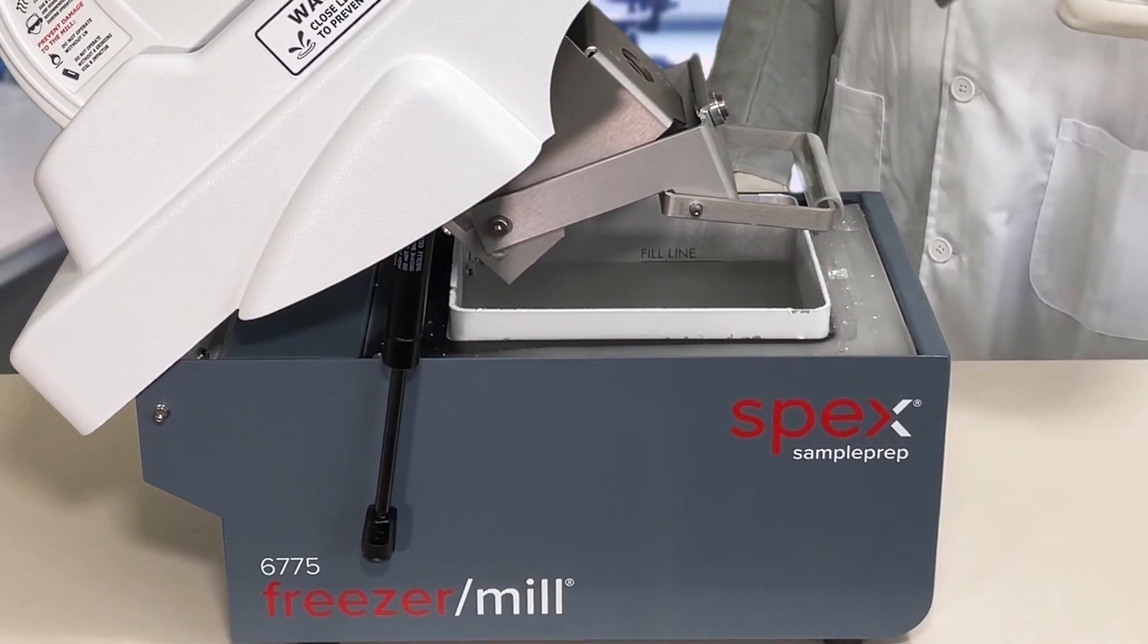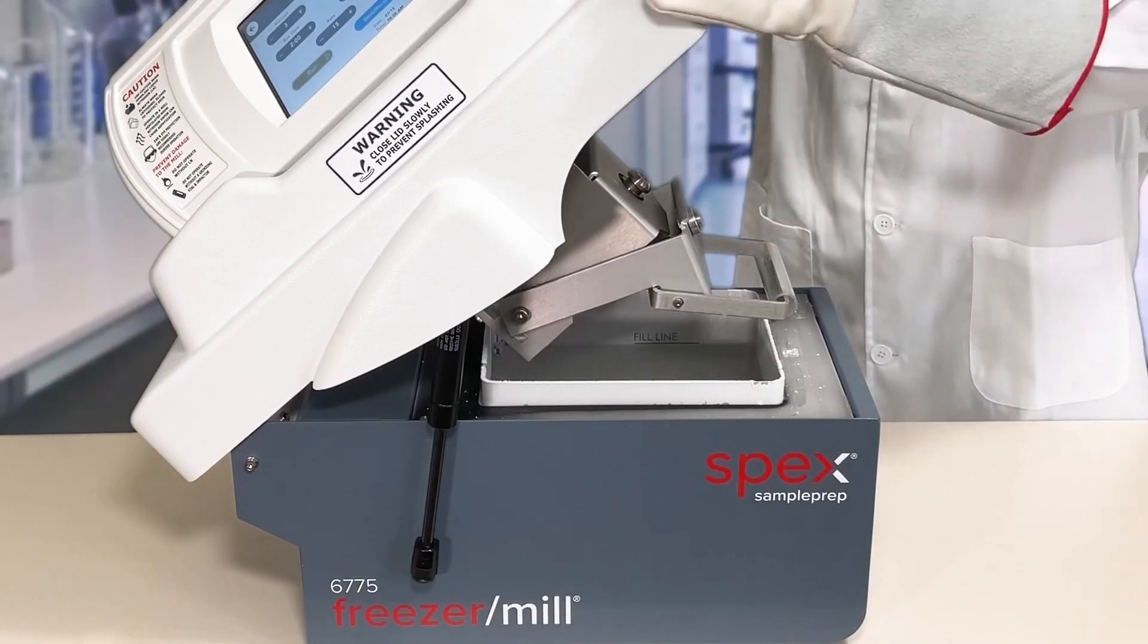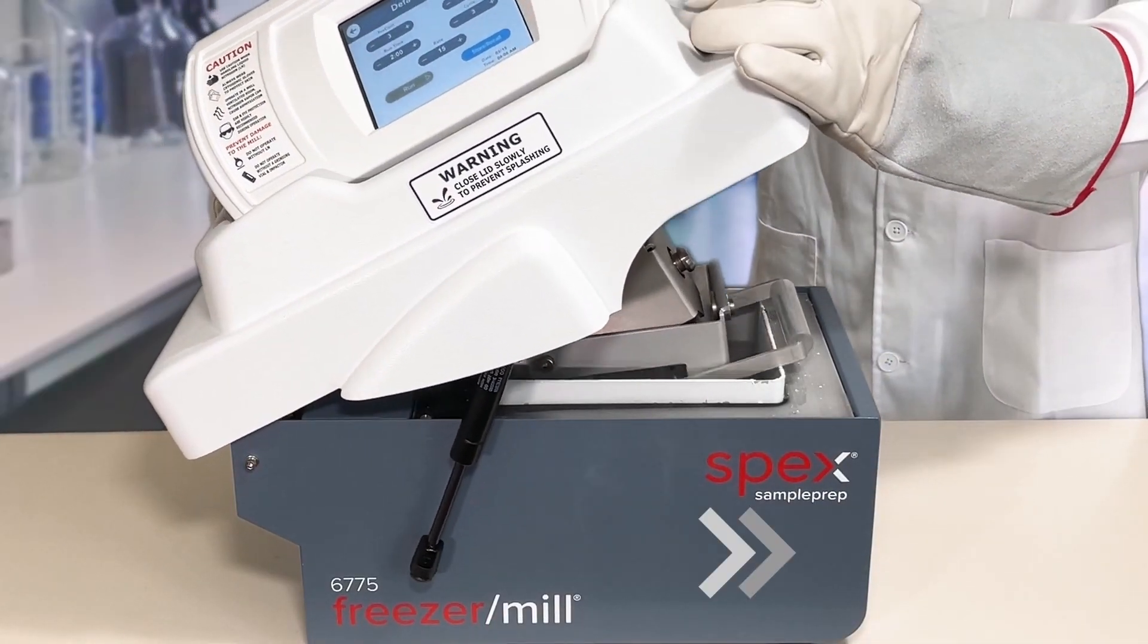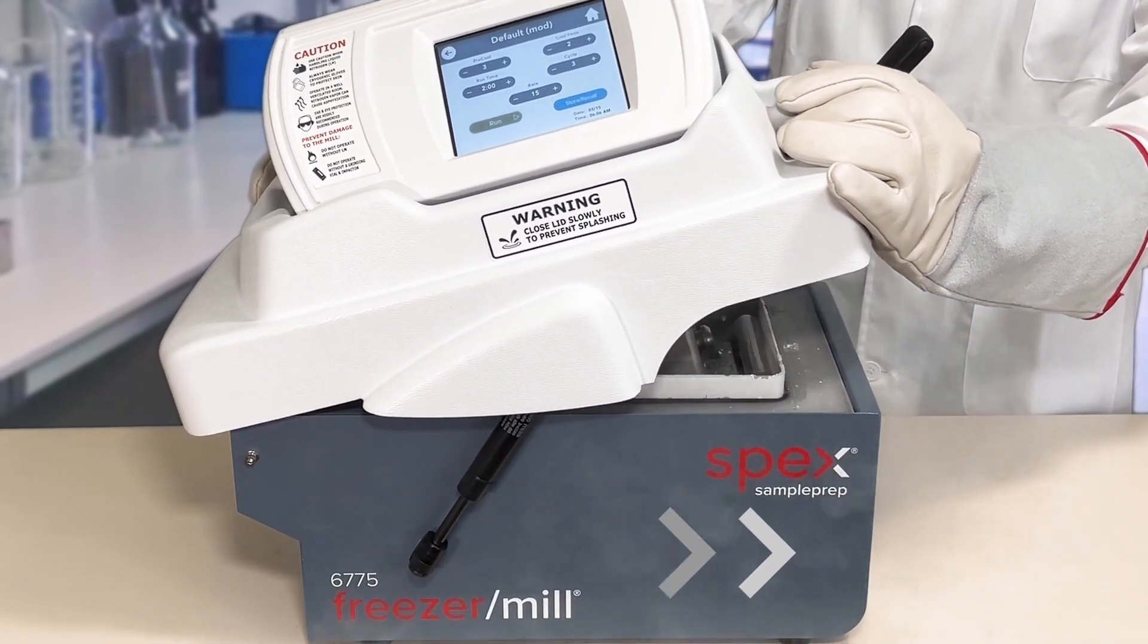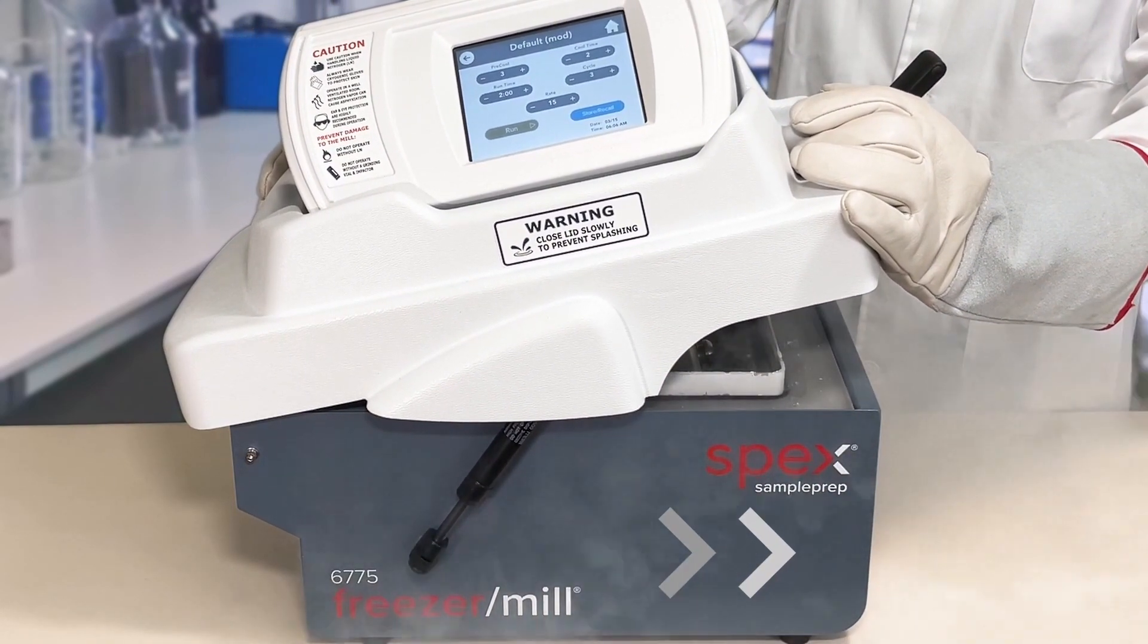Add the vial to the milling chamber and close the lid of the Spex mill slowly. Fast closing of the lid will cause spills of liquid nitrogen on the work surface and potentially on the operator.